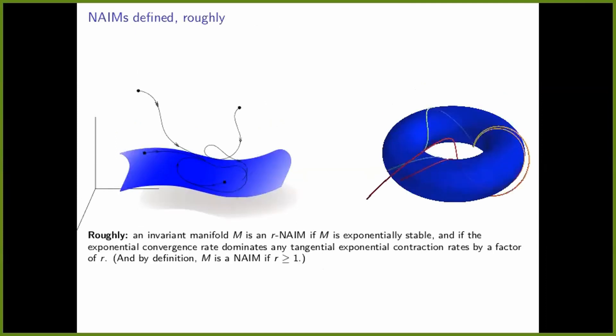What's the rough definition of a NIM? Roughly, an invariant manifold is an R-NIM for some integer R if: first, the invariant manifold M must be exponentially stable; and moreover, the exponential convergence rate to the manifold must dominate any tangential exponential contraction rates by a factor of R. So you have to converge to the manifold way faster than things within the manifold converge.